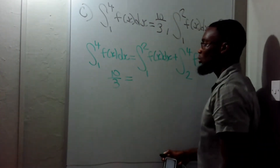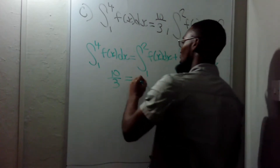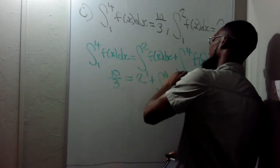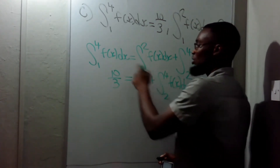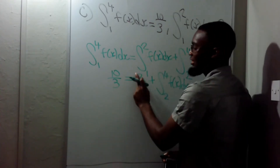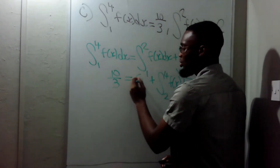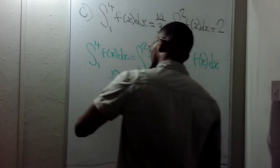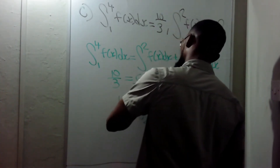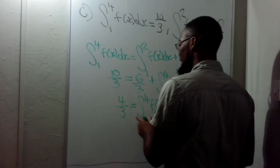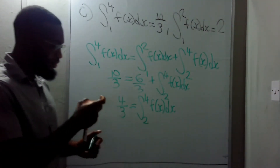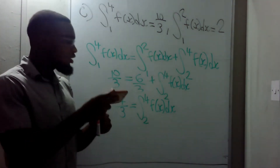So: the integral from 1 to 2 of f(x) dx, which is 2, plus the integral from 2 to 4 of f(x) dx equals 10/3. Now 2 is 6/3, so bringing it over: 10/3 minus 6/3 gives 4/3. Therefore the integral from 2 to 4 of f(x) dx equals 4/3.